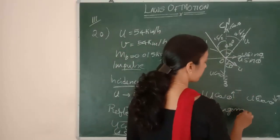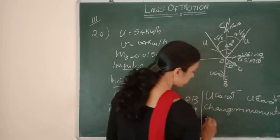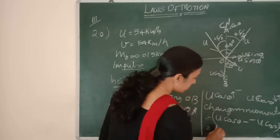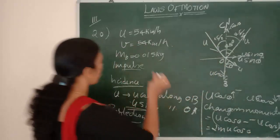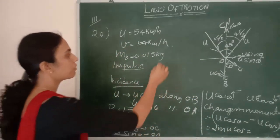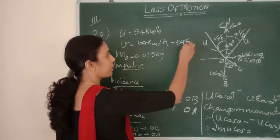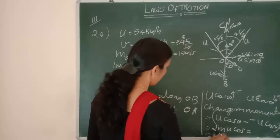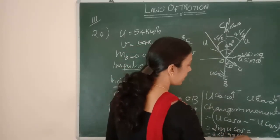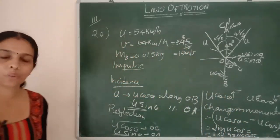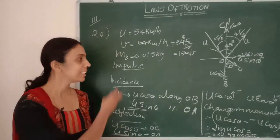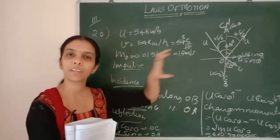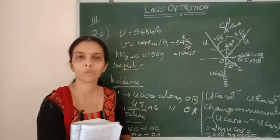Change in momentum = final momentum − initial momentum = m*(u*cos θ − (−u*cos θ)) = 2*m*u*cos θ. Substituting values: 2 × 0.015 × 15 × cos(22.5°). This gives the impulse imparted to the ball. The reason we take the difference here is that we need the change in momentum, not the sum.